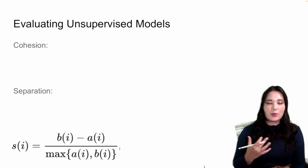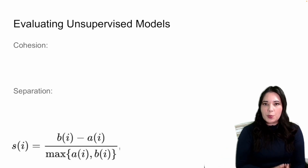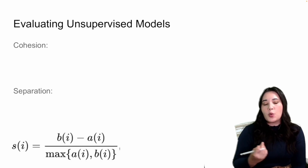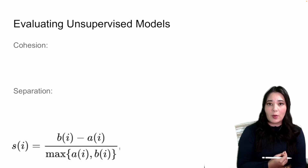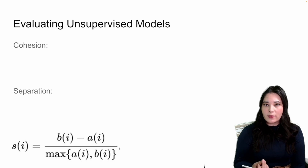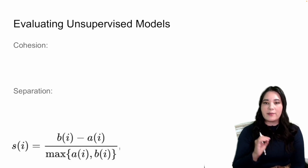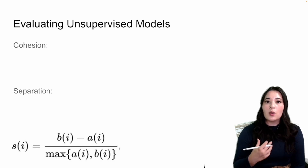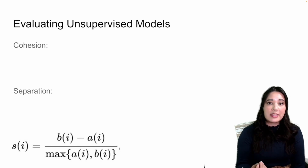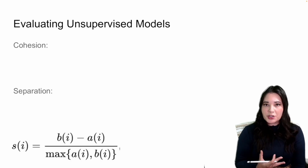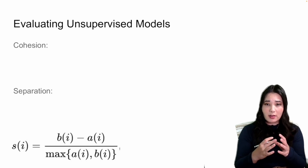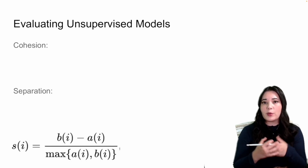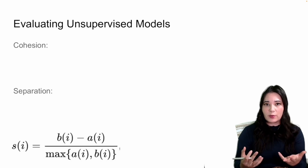Now that we know how to run k-means, how do we decide if the model is doing well? In supervised machine learning we can just compare outputs to the known correct answer. But in unsupervised machine learning, by definition we don't have a correct answer. One way we can assess performance is by looking at how cohesive and separate the clusters are. Cohesion refers to the idea that data points within a cluster are very similar to other data points in that cluster.